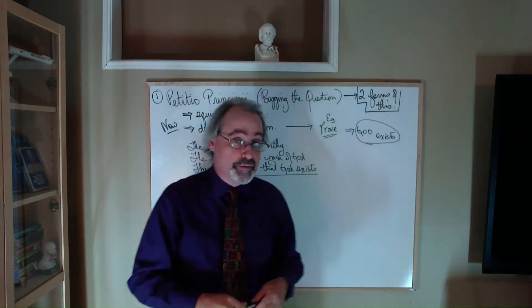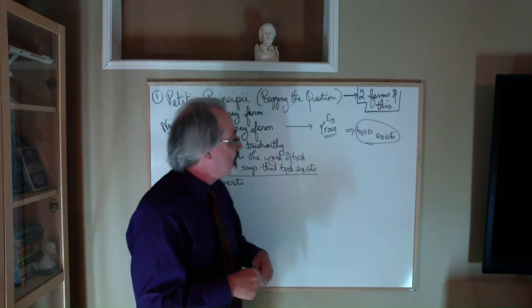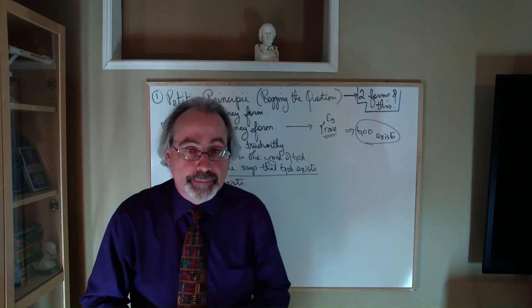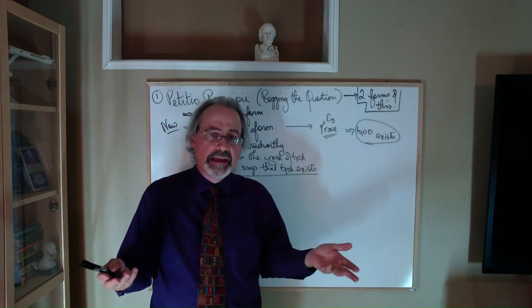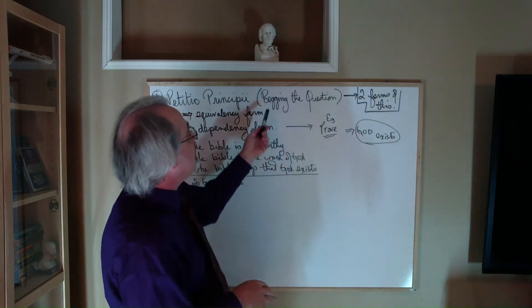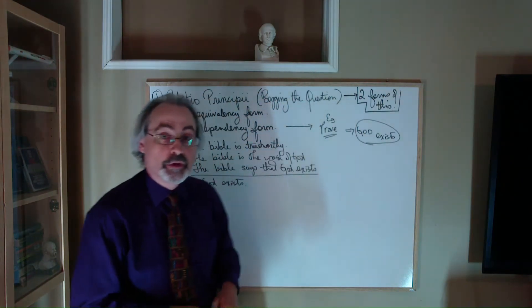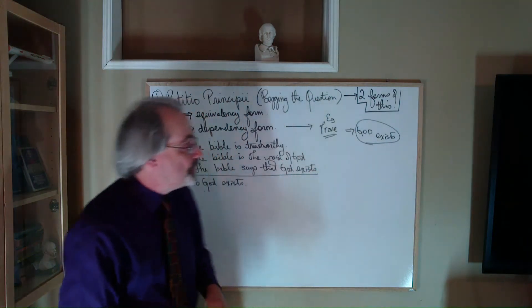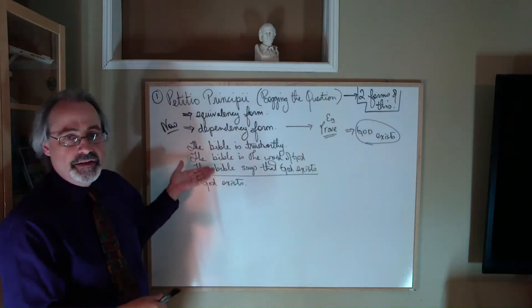So forgive me for using a very standard example in philosophy. You're going to prove the age-old question, the existence of God. And here is a version of a dependency begging the question, an example of fallacy in the dependency form.